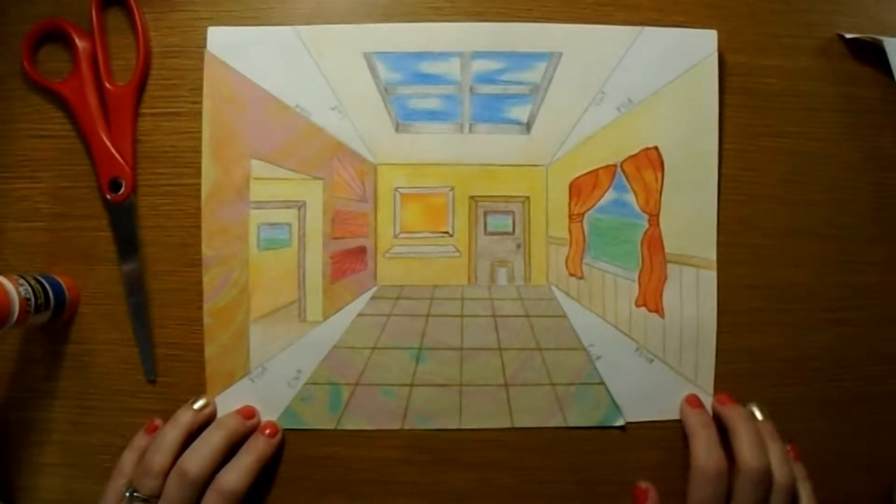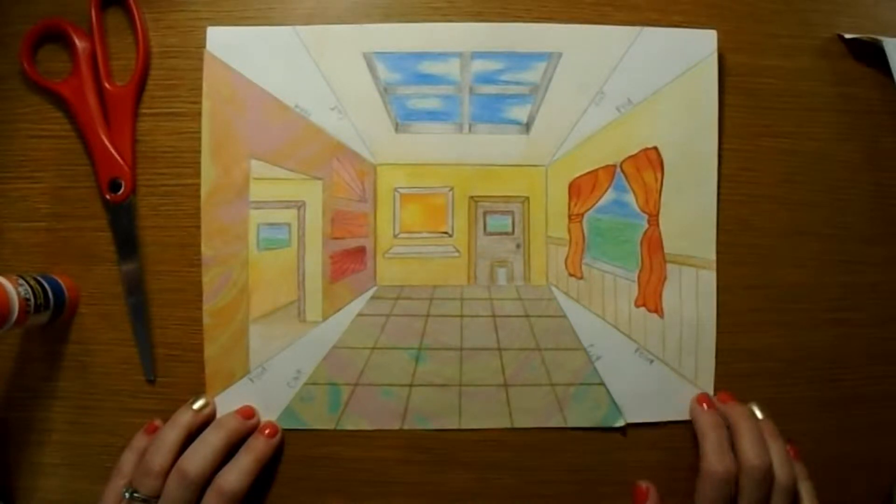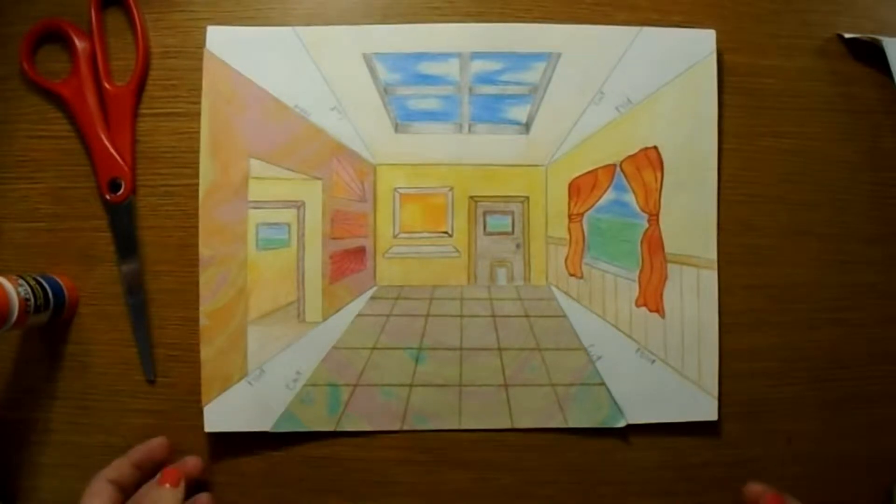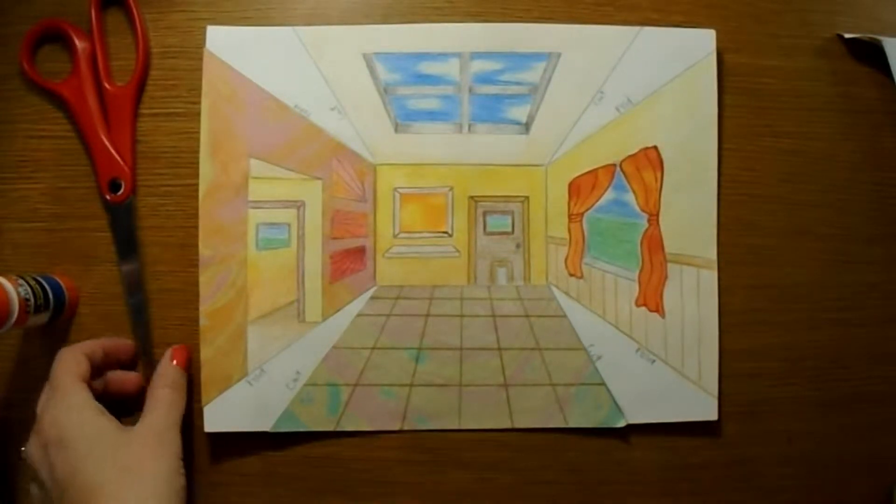Once you've finished coloring all the pieces to your room, you have your prints glued in place, and you've got your details outlined with either colored pencil or sharpie marker, now you're ready to start to construct your room.